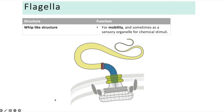Flagella is a whip-like structure that spins at the base using a motor to enable movement. Not all cells have it — a sperm cell is one example that does.